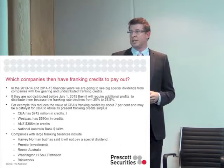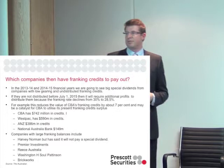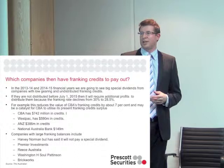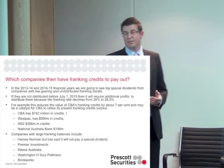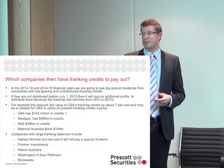For example, CBA's franking credit balance is $742 million — the largest bank. Westpac has $590 million, ANZ $386 million, and NAB $149 million. Other companies with potential to pay out large special fully franked dividends include Harvey Norman, which has a large franking balance but will not pay a special dividend, as well as Premier, Reece, Washington H. Soul Pattinson, and Brickworks.